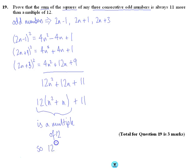So 12 brackets n squared plus n plus 11 will always be 11 more than a multiple of 12, and I'm just going to finish it with a box to say my proof is done, and that's it.